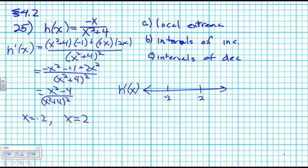When x is really big and negative, what kind of values do we get out of h prime? Put negative 10 in here. Negative 10 squared is 100, 100 minus 4, positive 96. We already said the bottom is always positive. I think we're getting positive numbers in that interval.